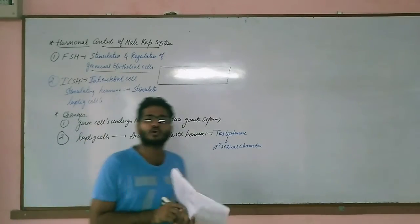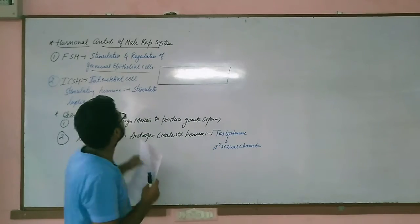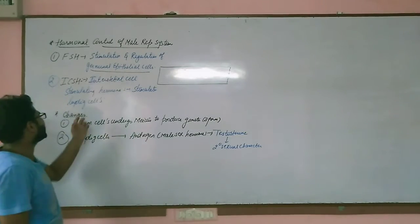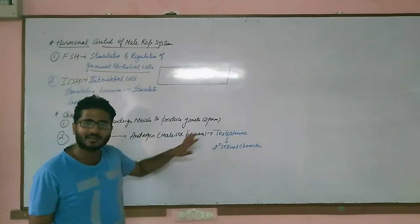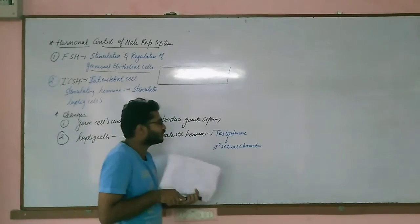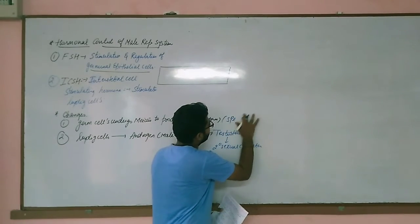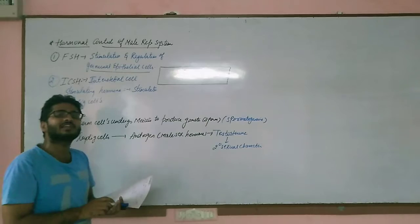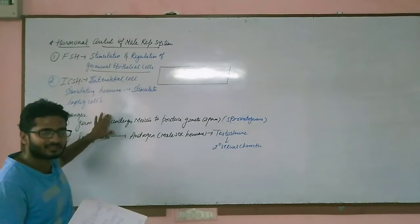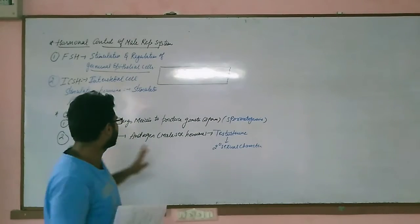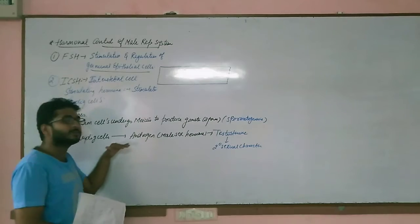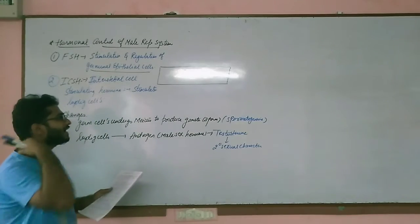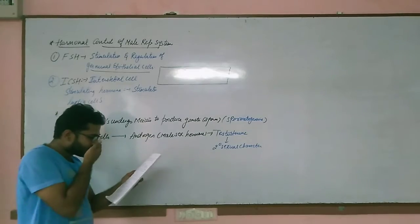Testosterone is responsible for secondary sexual behaviour and secondary sexual characters in males. To summarize so far: the two important hormones are Follicular Stimulating Hormone and Interstitial Cell Stimulating Hormone. FSH stimulates and regulates the growth of germinal epithelial cells. When activated, germ cells undergo meiosis to produce male gametes via spermatogenesis. ICSH stimulates the Leydig cells, which are activated by the pituitary gland, and they start secreting androgens — the male sex hormone testosterone — which is responsible for secondary sexual characters.